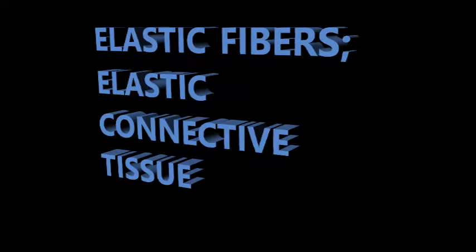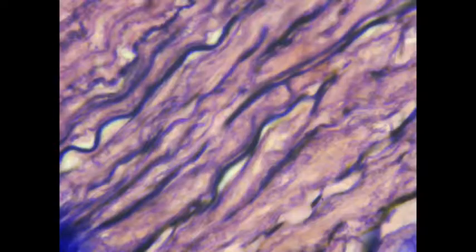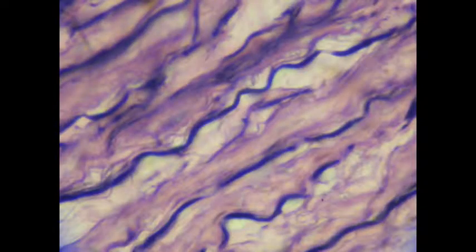Elastic fibers are produced when the protein elastin is assembled onto a scaffolding made by the protein fibrillin. The elastin proteins are highly hydrophobic, especially after being cross-linked to each other.